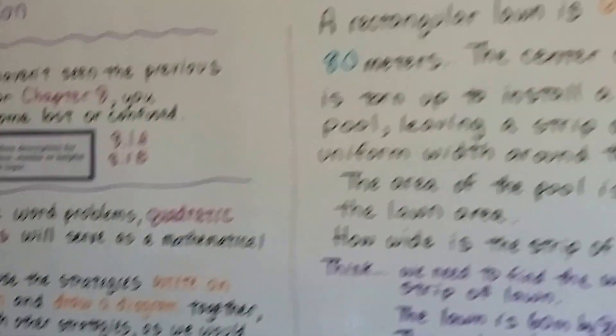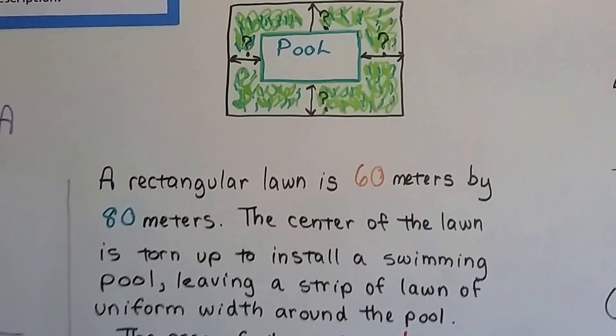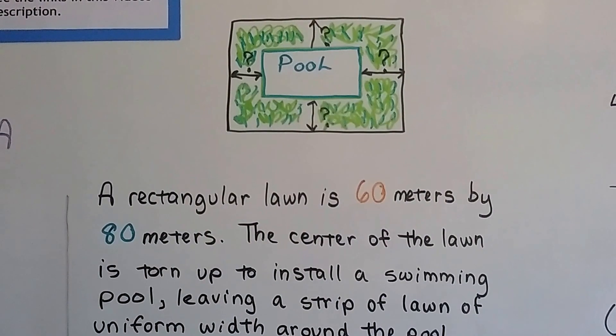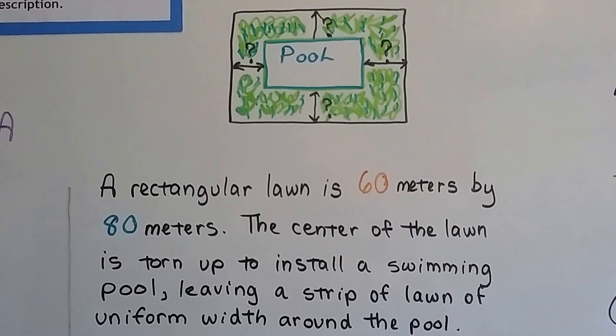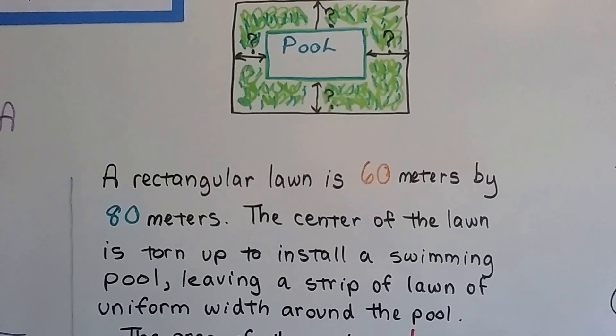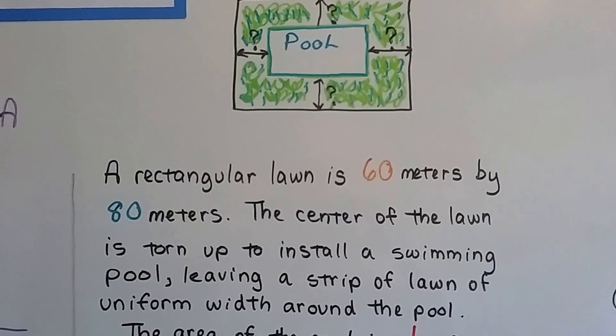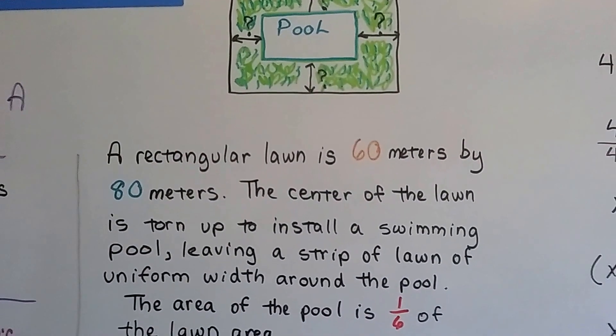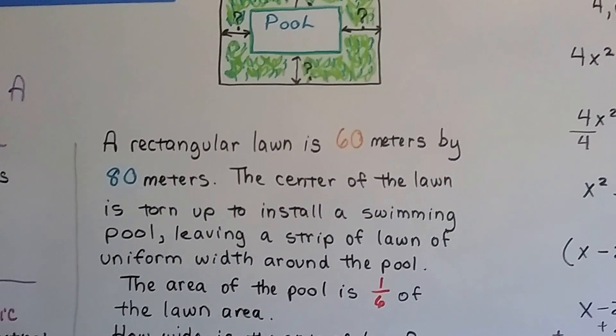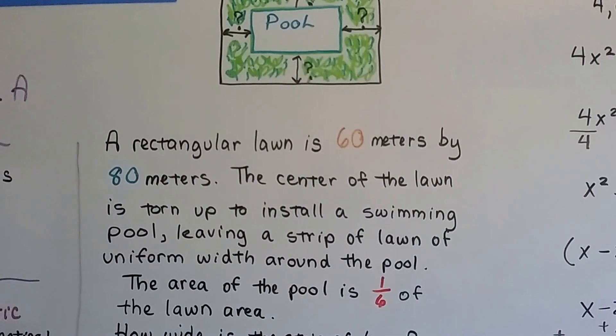So we have a swimming pool that's going to be built. A rectangular lawn is 60 meters by 80 meters and the center of the lawn is torn up to install a swimming pool, leaving a strip of lawn of uniform width around the pool. The area of the pool is one-sixth of the lawn area. How wide is the strip of lawn?